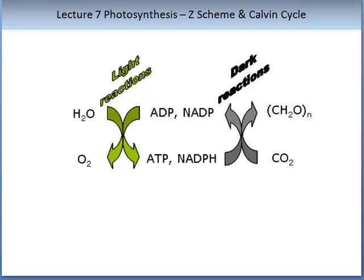In the light reactions, NADP is converted and ATP is produced. In this conversion, water is used and oxygen is released. In the dark reactions, NADPH is broken down to NADP. As this breakdown occurs, carbohydrates are formed, releasing carbon dioxide.